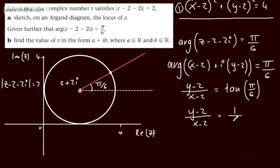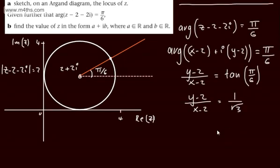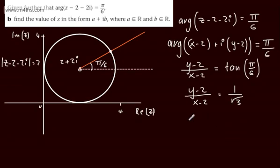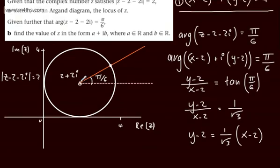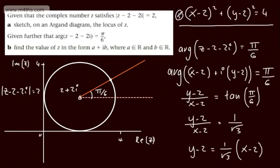I'm going to leave it as 1 over root 3, as it will probably make my life a little easier. So what we're going to have is y minus 2 is equal to 1 over root 3 times the quantity x minus 2. This is just one way of doing that — you could pick this point in Cartesian form, get the value of tan of pi by 6, and use that directly. I've removed the argument, but you're welcome to do it in Cartesian form. So here's equation 1, and here is equation 2.